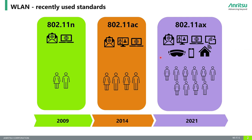In this slide we can see the overview of recently used standards. On the left we have 802.11n, in the middle 802.11ac, and on the right side 802.11ax. Historically, the N standard was officially released in 2009, the AC standard in 2014 — that's AC wave 1, and a year later wave 2. The AX standard was released in February 2021. 802.11ax is also known as Wi-Fi 6, AC as Wi-Fi 5, and N as Wi-Fi 4.